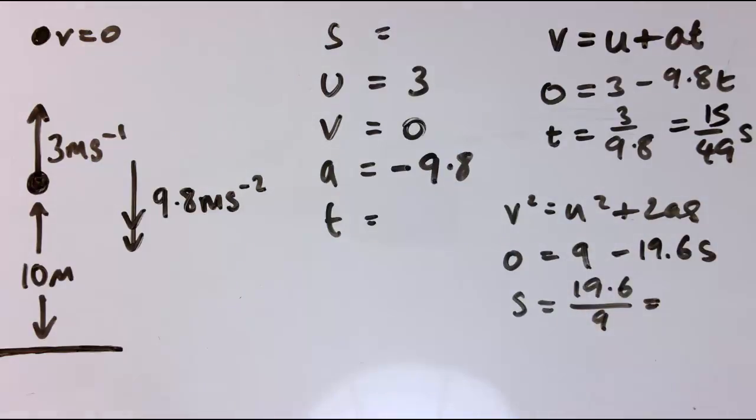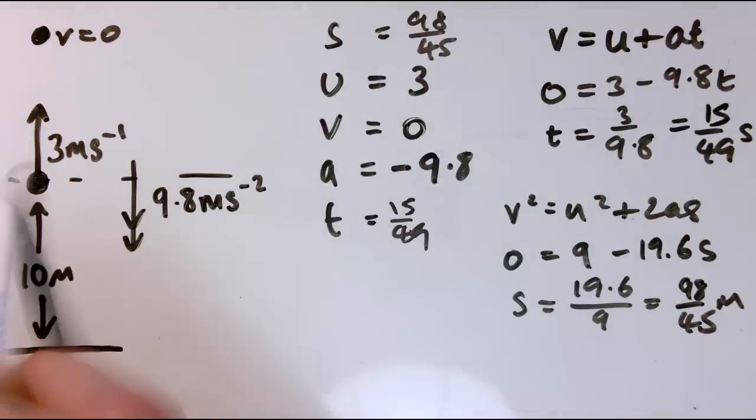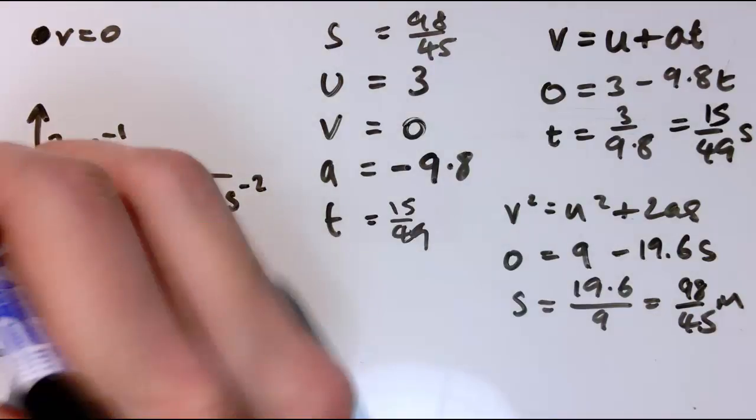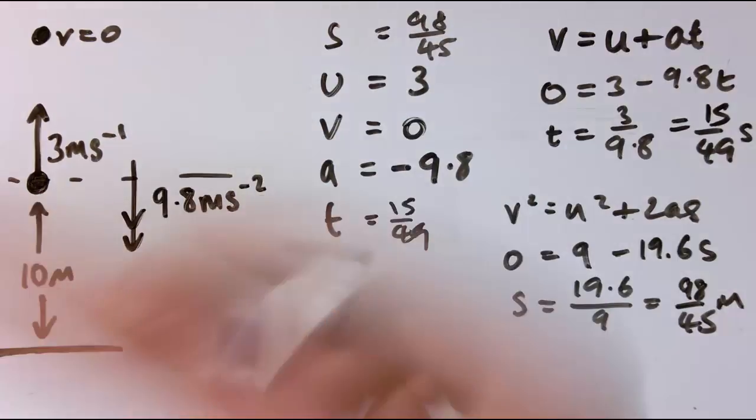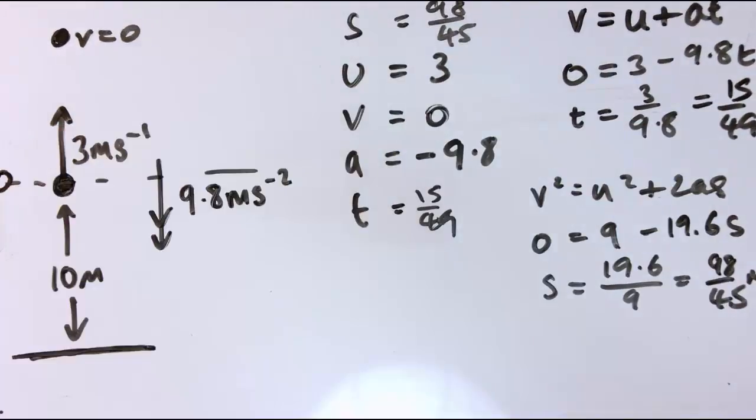So S equals 9 over 19.6, which is 98 over 45, or about 2.17 recurring, but that's fine, let's just leave it as a fraction, and that's in meters. And that tells us how far above this initial level we are. So actually, if this is what I'm taking to be my U, where my initial velocity is, this is the level that I've got to take as zero for the displacement. So the axis here is zero.